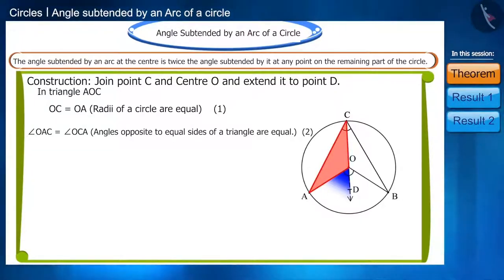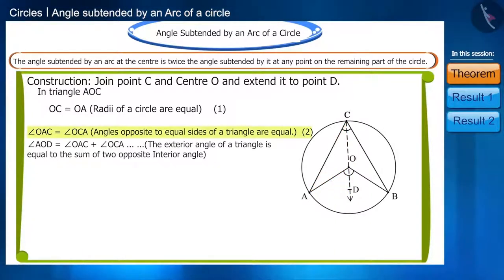Angle AOD is the exterior angle of triangle AOC. That's why we can write the angle AOD as equal to the sum of these two angles. We can write angle AOD as twice of angle OCA.